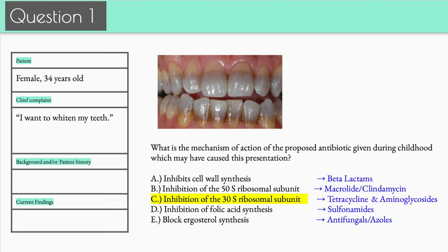On your actual exam they may not go deep into which is 50s and which is 30s, but it's important to know the overarching concept: inhibition of protein synthesis applies to all the macrolides, clindamycin, tetracycline, and aminoglycosides. That might be something you want to commit to memory. D is inhibition of folic acid synthesis — sulfonamides are the ones that have to do with folic acid and that pathway.